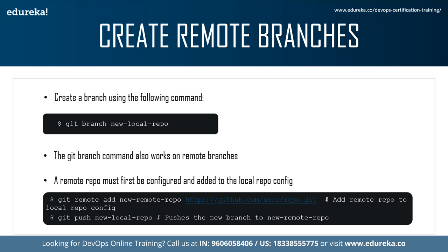So far these examples have demonstrated local branch operations. The git branch command also works on remote branches. In order to operate on remote branches, a remote repository must first be configured and added to the local repository configuration using the command: git remote add new-remote-repository. This is followed by pushing a copy of the local branch to the remote repository using: git push new-local-repo.